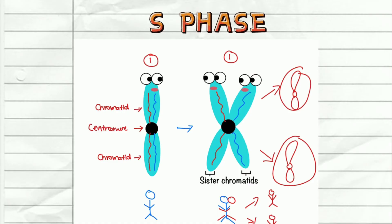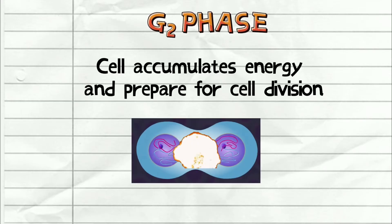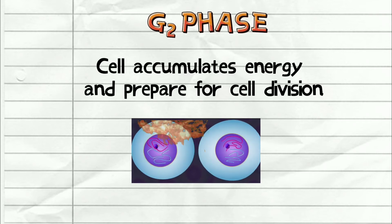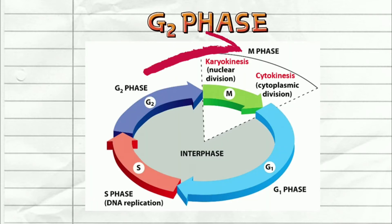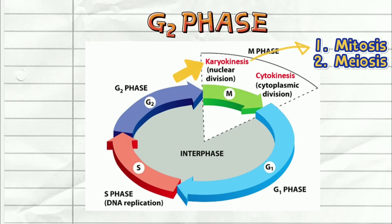And that is S phase. The last phase of interphase is G2 phase, whereby the cell just accumulates energy and prepares for cell division. Once that is done, M phase can occur whereby the cell now really starts to split. As mentioned, karyokinesis is the main process in cell division during M phase, which is divided into mitosis and meiosis. However, in this video we will only be doing mitosis.